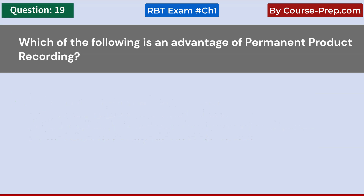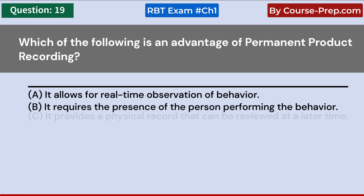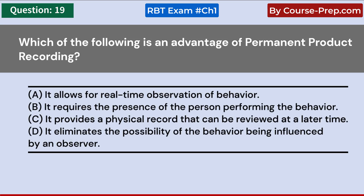Which of the following is an advantage of permanent product recording? A. It allows for real-time observation of behavior. B. It requires the presence of the person performing the behavior. C. It provides a physical record that can be reviewed at a later time. D. It eliminates the possibility of the behavior being influenced by an observer. Answer C: It provides a physical record that can be reviewed at a later time.